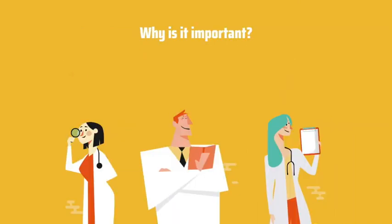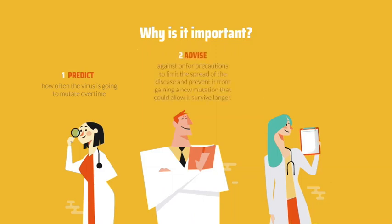With such information, researchers would be able to predict how often the virus is going to mutate over time and advise against or for precautions, such as social distancing, in order to limit the spread of the virus and prevent it from gaining a mutation that could allow it to survive longer. In addition, this may pave a way for a global vaccination to target the different strains of the virus.